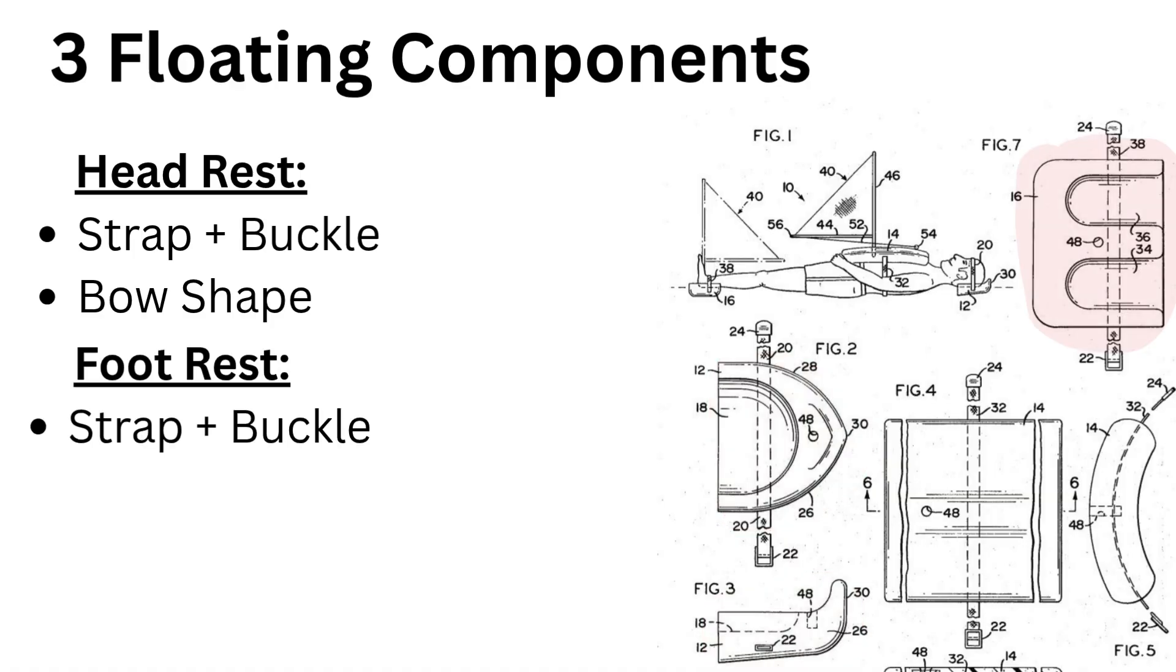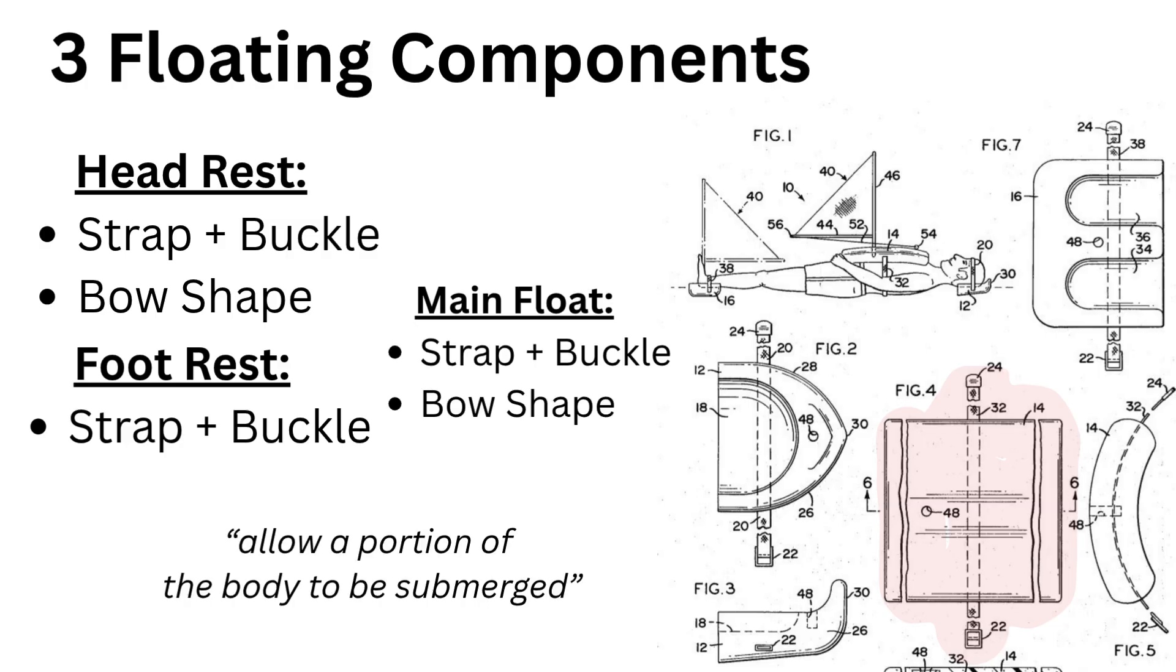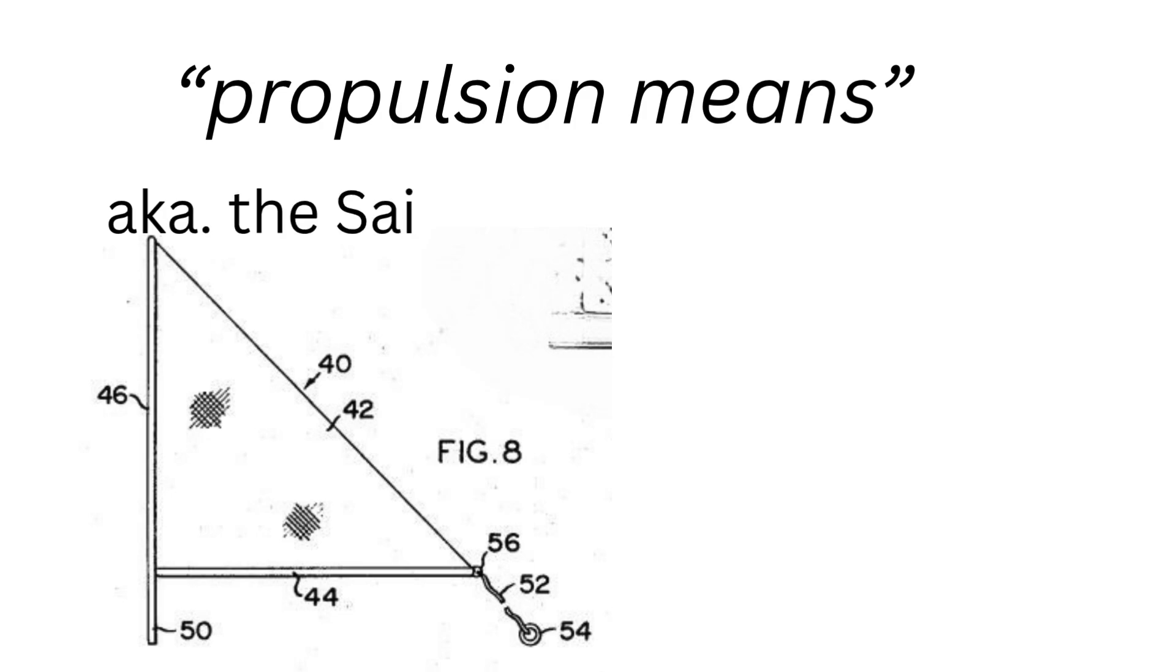Then there's the footrest, which is also strapped to your feet, ensuring you're properly trapped when you're the most vulnerable. Lastly there's the main body float, which extends from mid-waist to mid-chest and is designed to allow a portion of the body to be submerged. The final component is referred to as propulsion means, aka a tiny sail that looks like the flag that tells you you've reached a ninth hole.